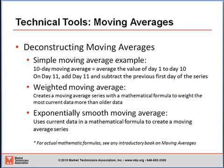Deconstructing moving averages. There are three basic types. The simple moving average — the best example is a 10-day moving average. You take the average value of days 1 to 10. Then on day 11, you add day 11 and subtract the previous day 1, so you essentially have a new series of 10 with the first number gone and the 11th day added in. That was the very first type of moving average, done back in the 1800s by Charles Dow.